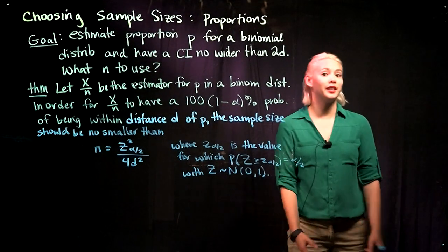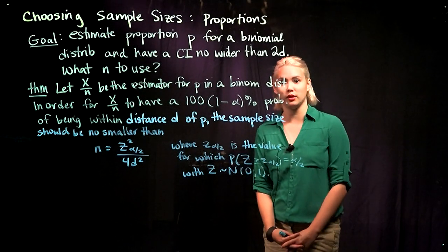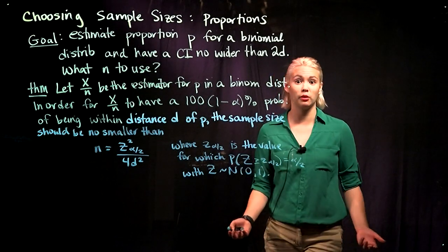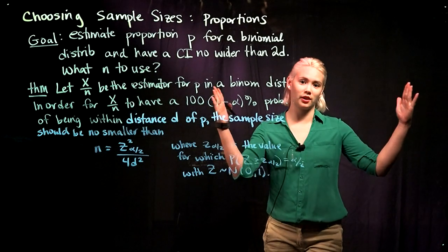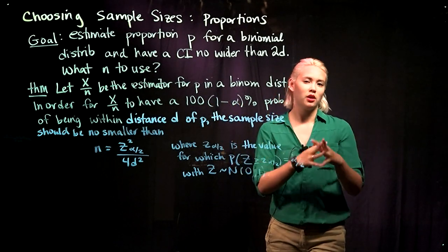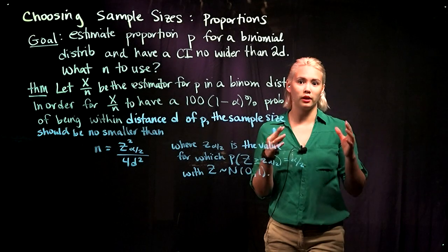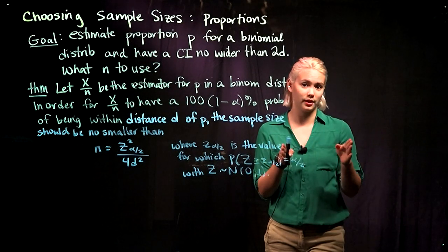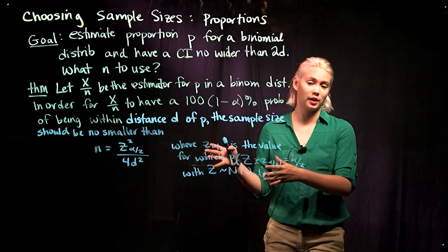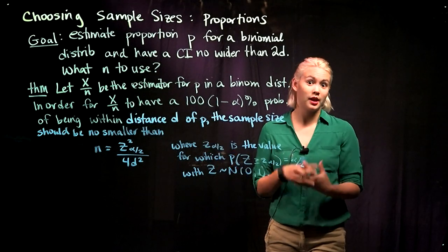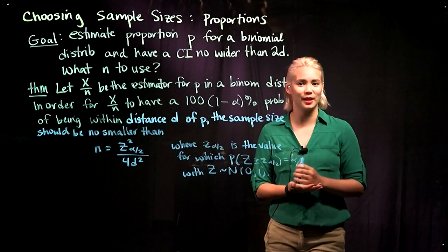In previous videos, we've seen how the sample size relates to the width of a confidence interval. Generally, as our sample size increases, our confidence interval narrows. An intuitive thing to ask would be: can we choose the width of a confidence interval and then select the sample size from there? That's what we'll be doing in this video — choosing sample sizes.